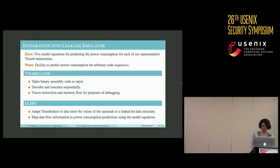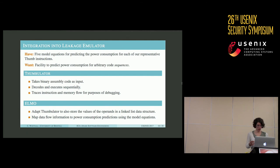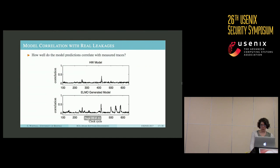We now have five model equations which allow us to predict the power consumption for each of our five representative Thumb instructions. What we actually want is to predict power consumption for arbitrary code sequences — and this is where the Thumbulator comes in. The Thumbulator takes as input a binary program in Thumb assembly, decodes and executes each instruction sequentially with the capability to trace the instruction and memory flow for debugging. We adapted this to also store the data flow — specifically the values of the operands in a linked list data structure — which is then used as input to the model equations, producing a predictive power consumption trace associated with the code segment of interest.